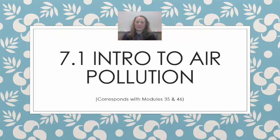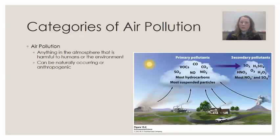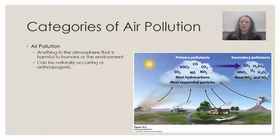Welcome to AP Environmental Science. In this video we are going to talk about air pollution — what it is, how it forms, and some of the sources associated with it. Air pollution is anything in the atmosphere that could be harmful to humans or to the environment, and it can come from natural sources or from anthropogenic, or human-caused, sources.